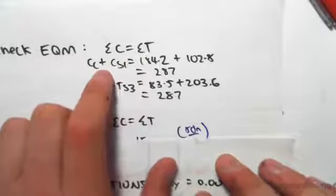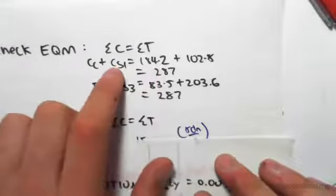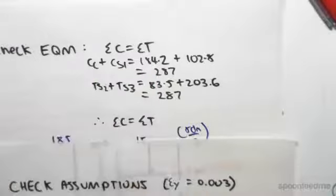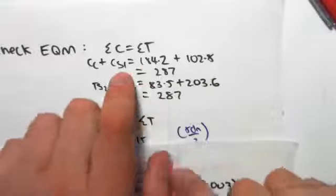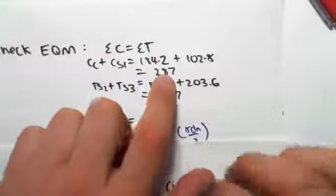So we're going to do the compression plus the compression first. So that's going to be the compression in the concrete plus the compression in the steel. So those are the values we found. We get 287.